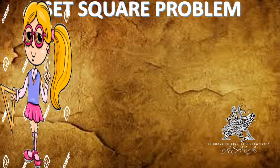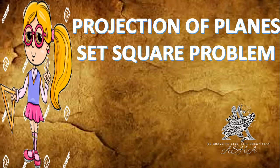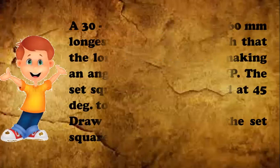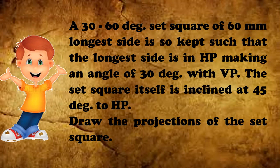Good morning, I am Asha from the Department of Mechanical Engineering, Global Academy of Technology. Today I will be discussing the set square problem in projection of planes. The problem: a 30-60 degree set square of 60 mm longest side is kept such that the longest side is in HP making an angle of 30 degrees with VP, and the set square itself is inclined at 45 degrees to HP. Draw the projections of the set square.